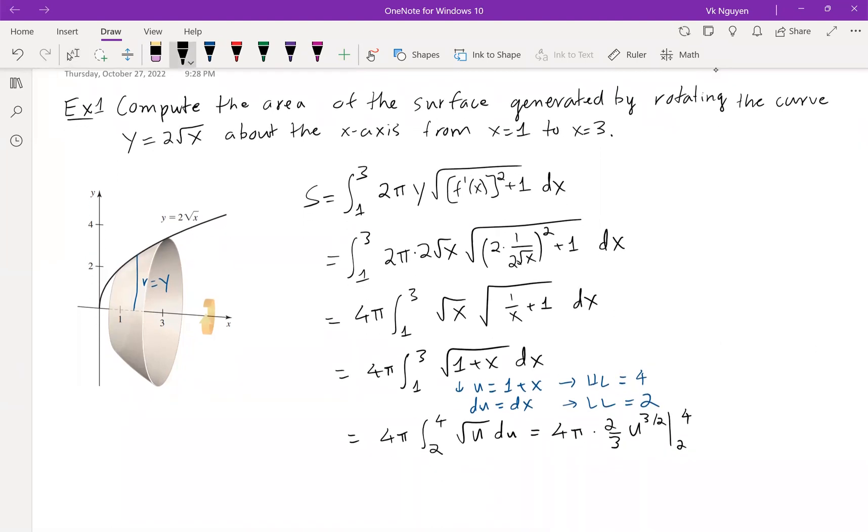This would be 8 pi over 3, and when we evaluate 4 to the 3 over 2 is 8, we get 16 pi over 3, 4 minus root 2. Yay! Let's move on to the second one.